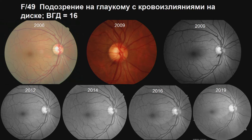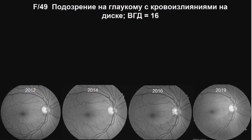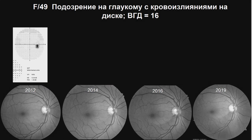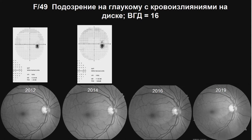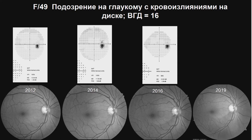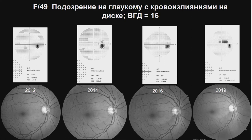What about the visual field? The visual field by standard automated perimetry was within normal in 2012 and remained normal until 2016. We found some abnormality in 2019. So even though the visual field was normal, we could find nerve fiber layer change in 2012 by photography.